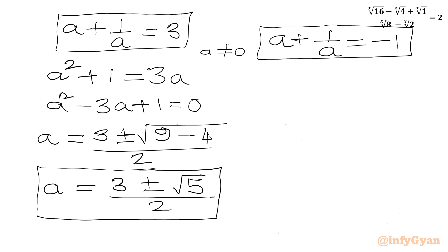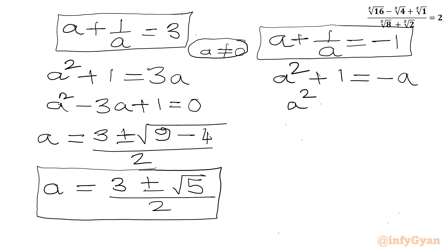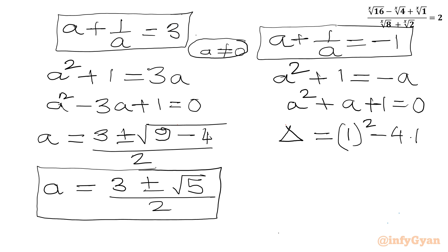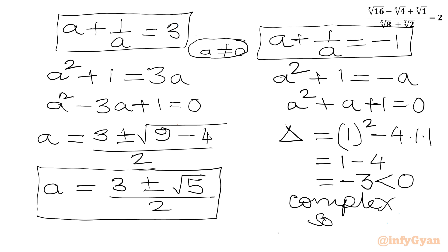For the second equation, a + 1/a = -1: multiplying both sides by a gives a² + 1 = -a, so a² + a + 1 = 0. The discriminant is b² - 4ac = 1 - 4 = -3, which is negative. Since the discriminant is negative, this equation only generates complex solutions, so we reject it for our real solution calculation.